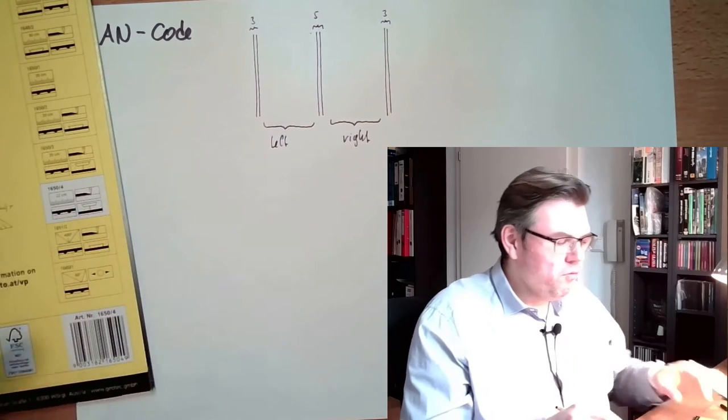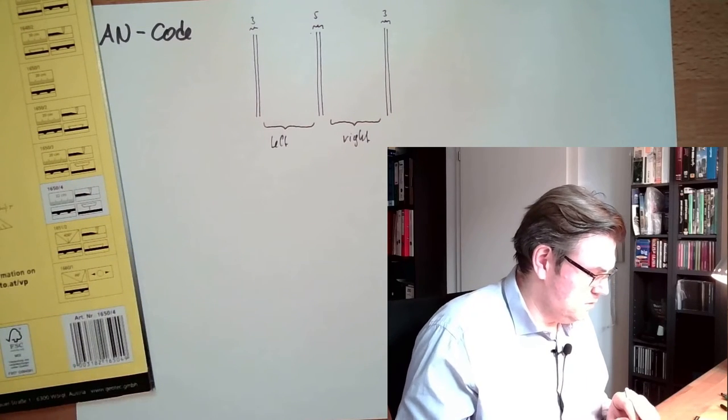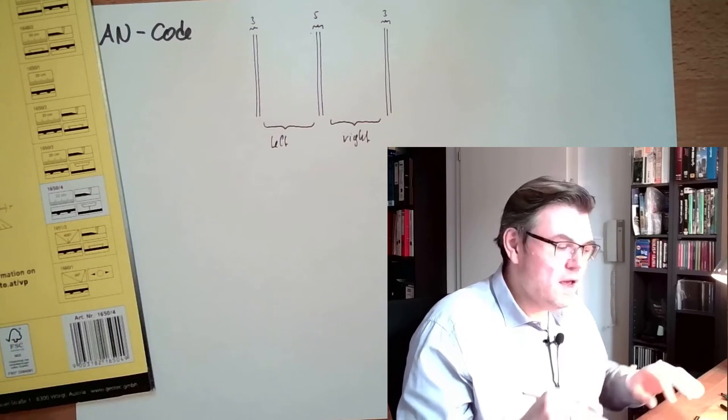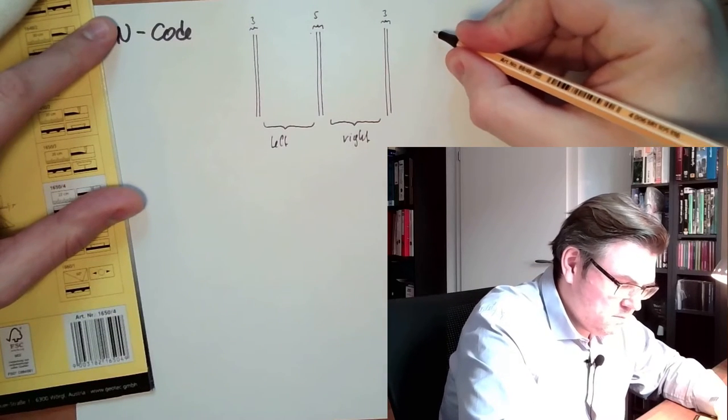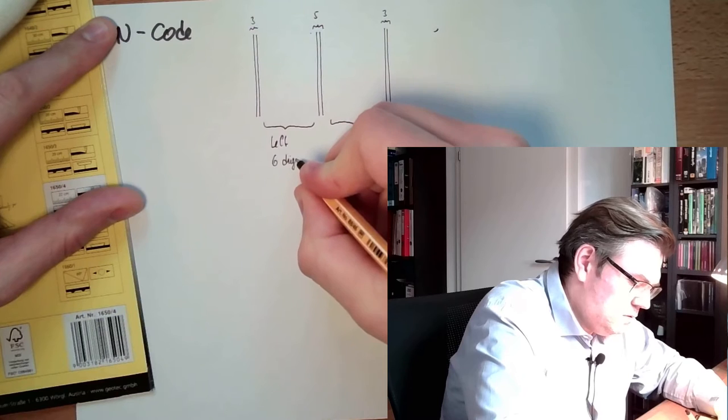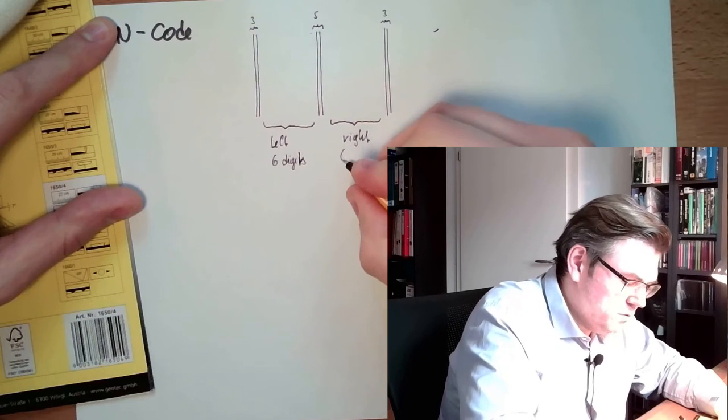And both of those two parts contain numbers. Both of them contain six numbers. And each number is coded. Six digits, six digits. Also here, six digits.